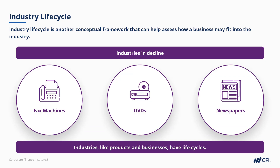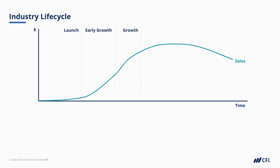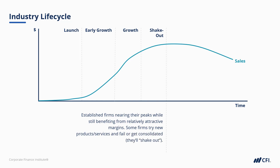Now, there are many exceptions, but in general, the industry life cycle typically looks something like this. We have a launch phase, followed by growth — you might even break this up into early and later stage growth. Shakeout is a period where a lot of established players are nearing their peaks and still enjoying relatively attractive margins. Some players will try different new things and fail, or get consolidated — in other words, they'll shake out.